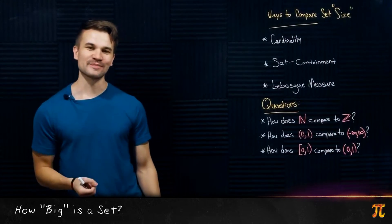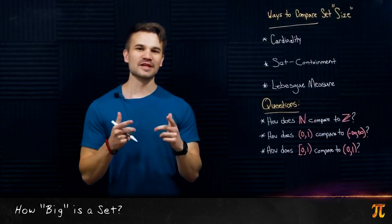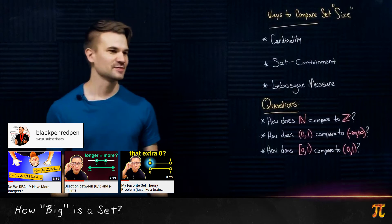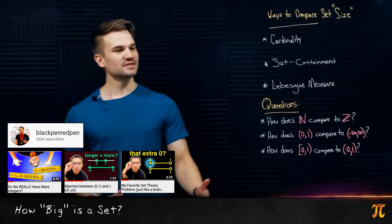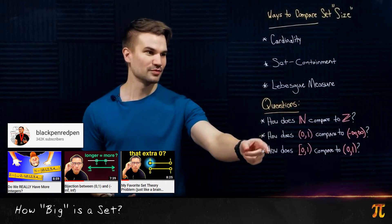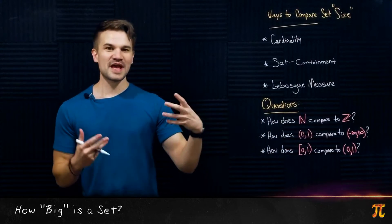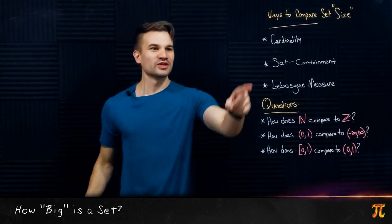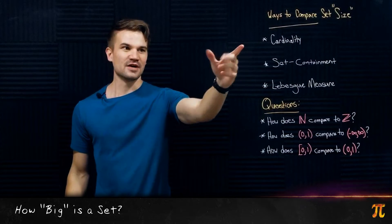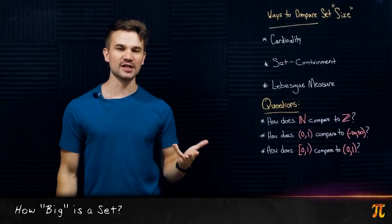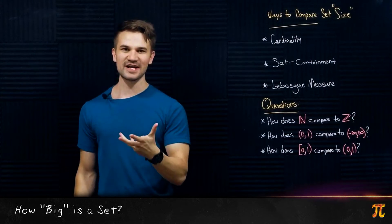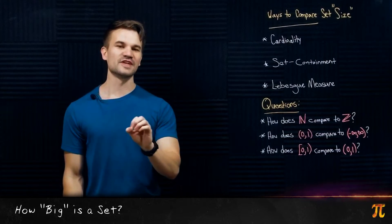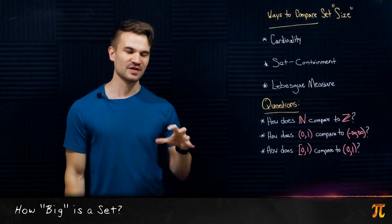Hey, what's going on guys, welcome back. Recently BlackPenRedPen made a couple of videos comparing the cardinalities of certain sets. He asked which has more elements: the natural numbers or the integers? When we ask which has more elements, we're really asking which set has the greater cardinality. Now cardinality is literally how many elements when it comes to finite sets, but for infinite sets it's more of an extension of that idea.